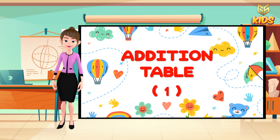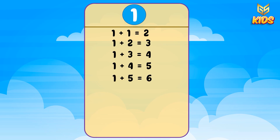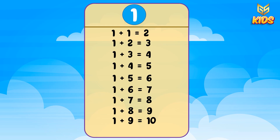Table number one — let's sing with me! One plus one is equal to two. One plus two is equal to three. One plus three is equal to four. One plus four is equal to five. One plus five is equal to six. One plus six is equal to seven. One plus seven is equal to eight. One plus eight is equal to nine.